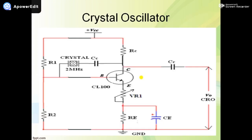This is the circuit of the crystal oscillator. In this there are two different parts of the circuit: one is the common emitter voltage amplifier, and another one is the feedback network or feedback circuit.